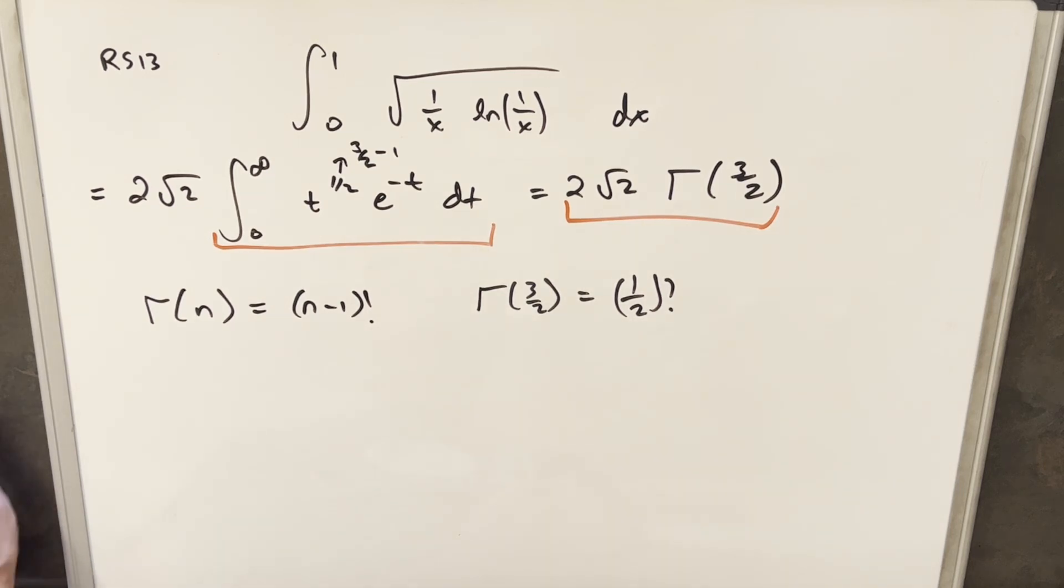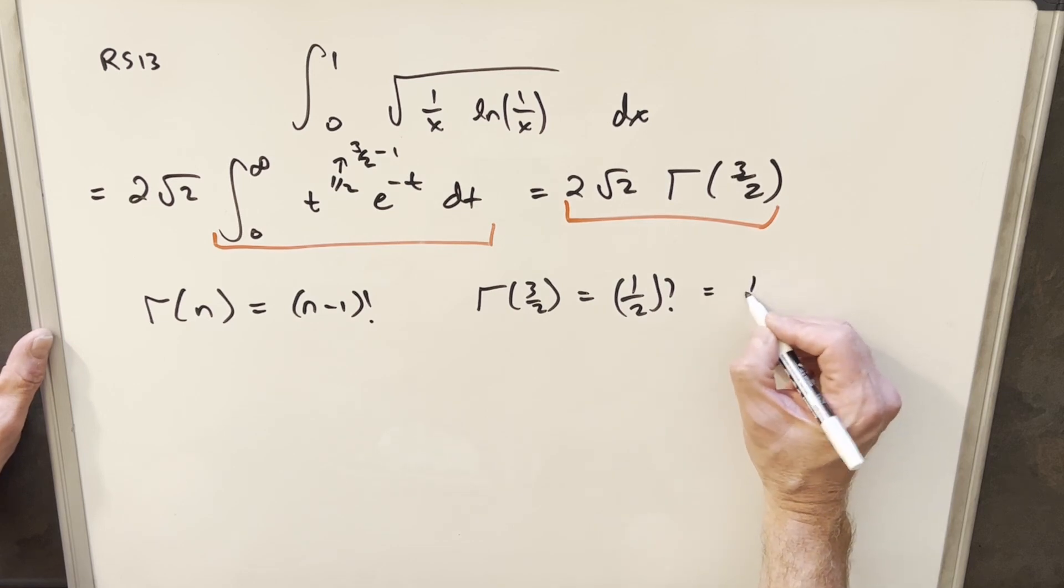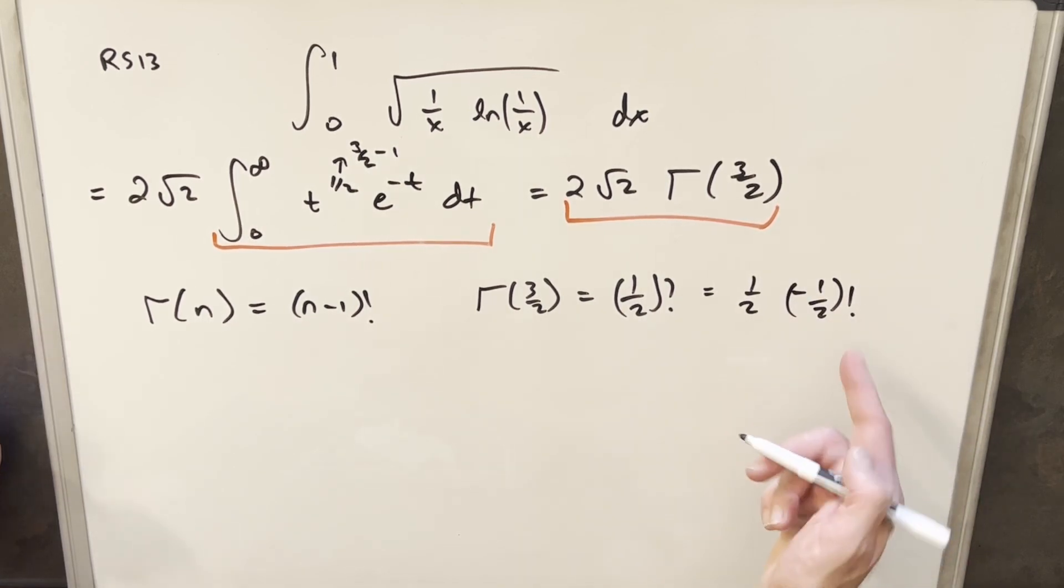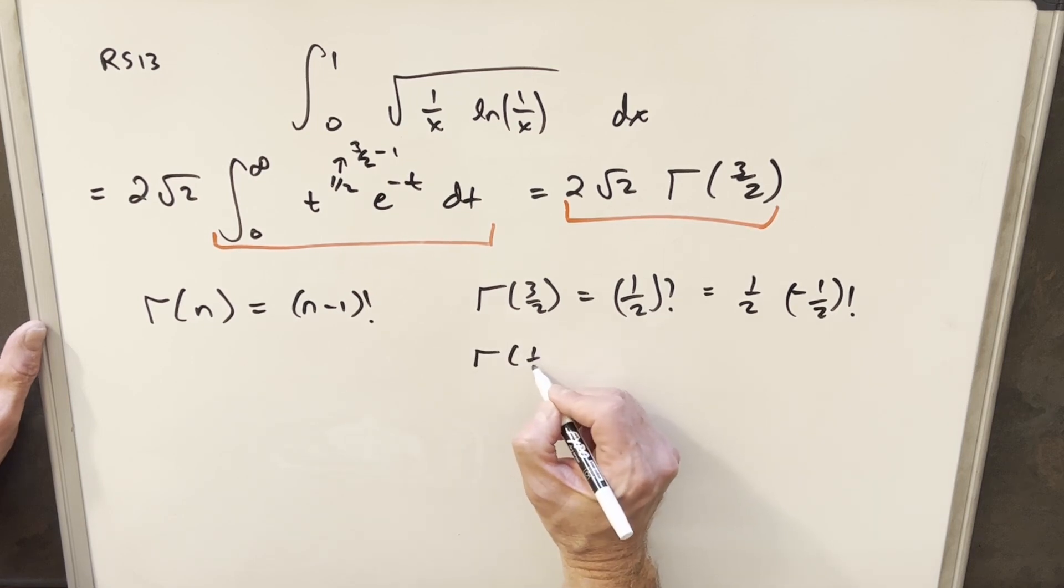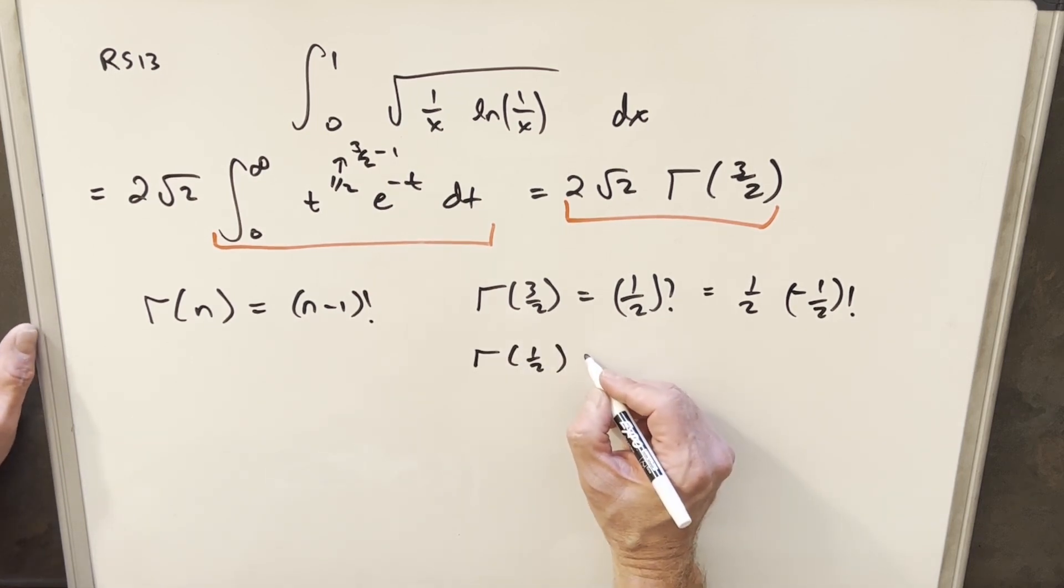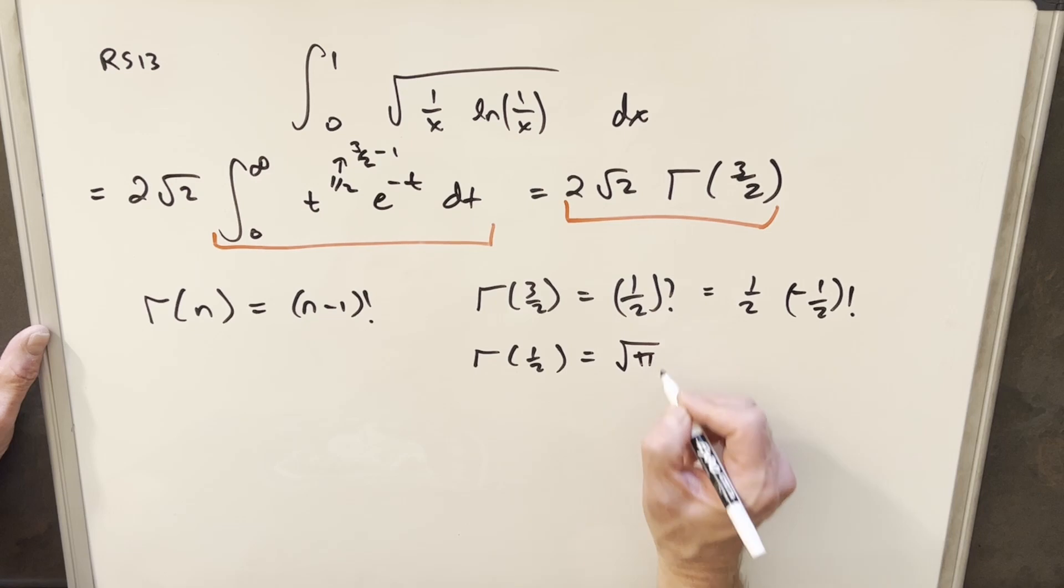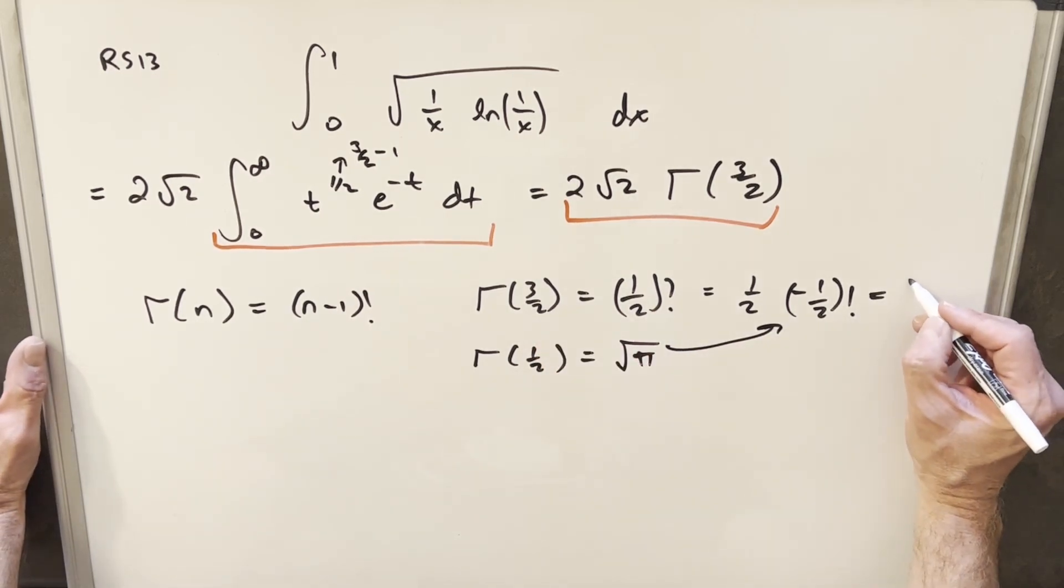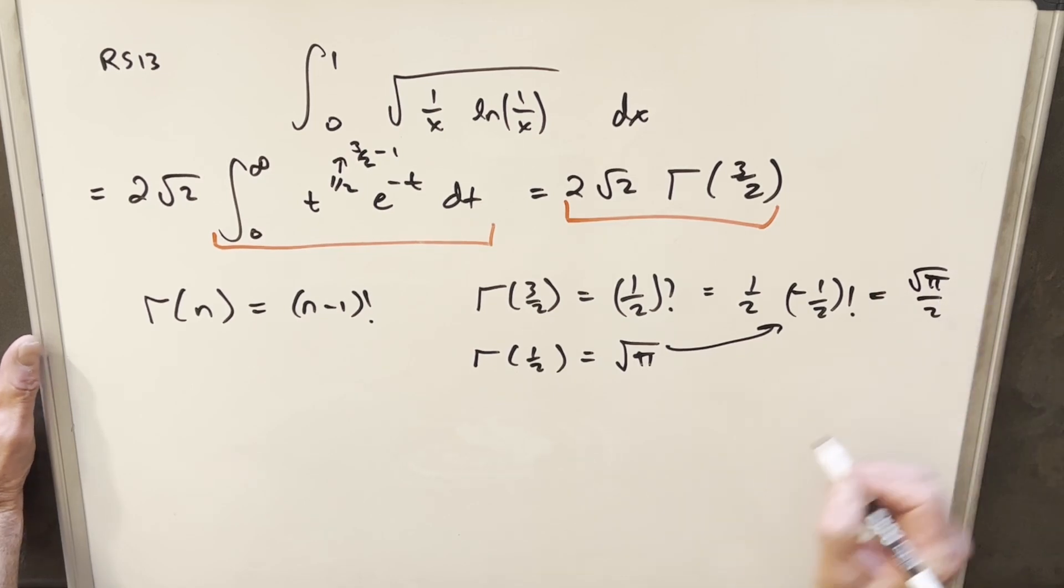Rather than go through all that, we'll use some known values. If gamma of 3 halves is 1 half factorial, we can write this as 1 half times minus half factorial. Minus half factorial is the same thing as gamma of 1 half. There's a known value for this, square root of pi. So we can put this back in here, and we know that our gamma of 3 halves value is just square root of pi over 2.